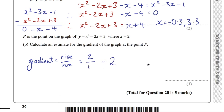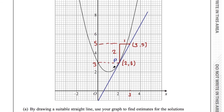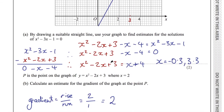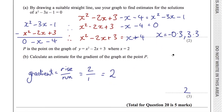The estimate for the gradient at point P is 2. There are three marks: one for drawing the tangent at point P, one for showing a method to find the gradient, and one for giving your answer. Thanks for watching — leave a like if you appreciated this. If you're after the rest of the questions in this paper, I've done those in separate videos. Subscribe if you want to see more content.